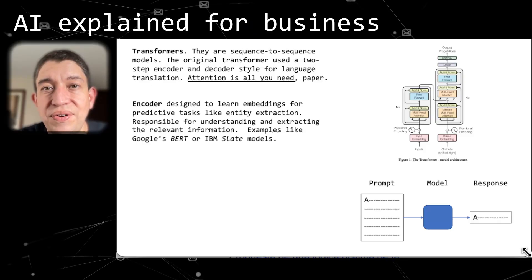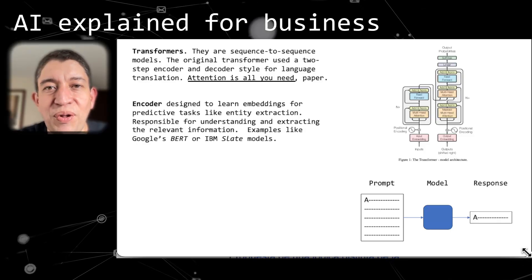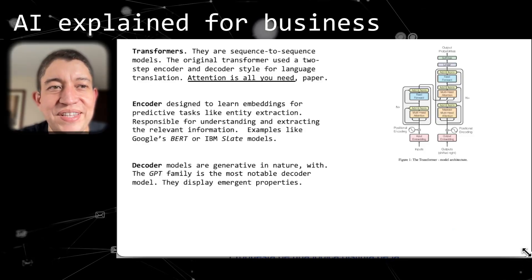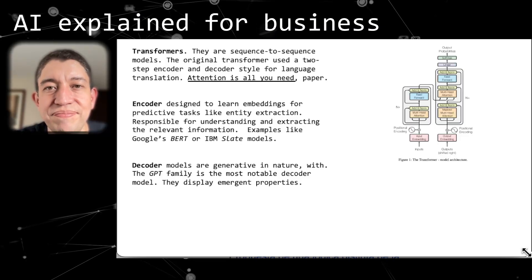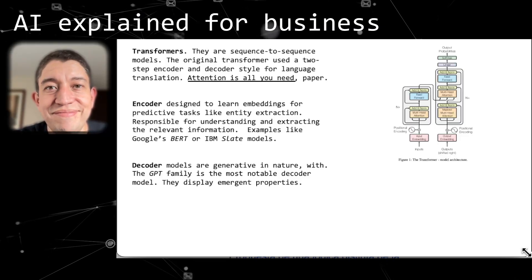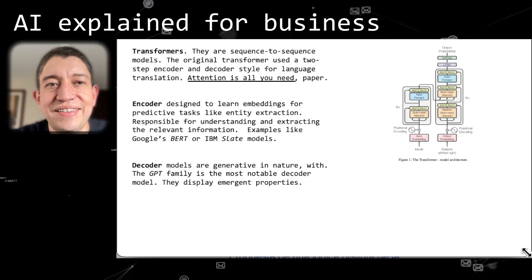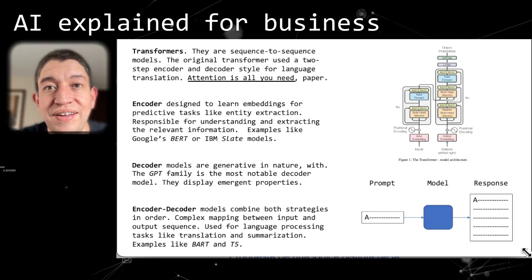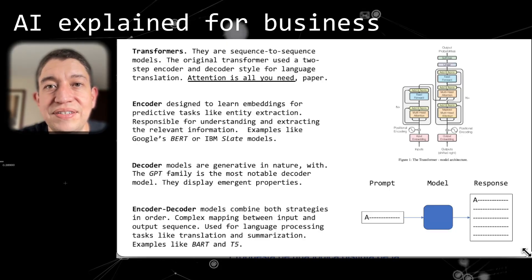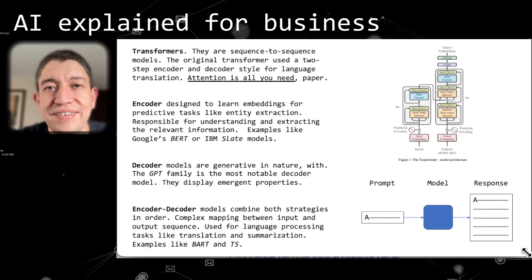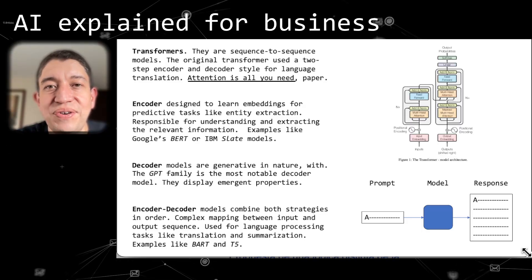Then there's another model which evolved and is very popular, which is the decoder-style model. GPT - you may have heard about the GPT family of models. Those are all decoder models, and they take advantage of the second part of this architecture.